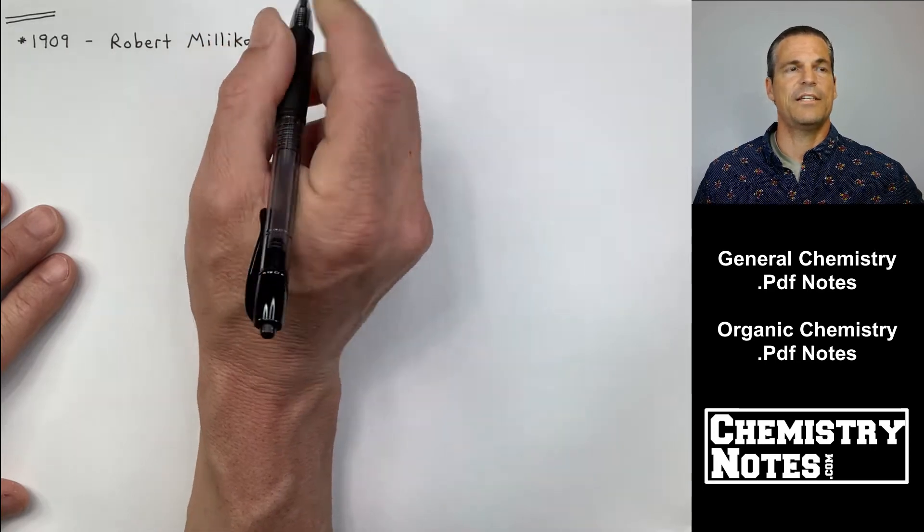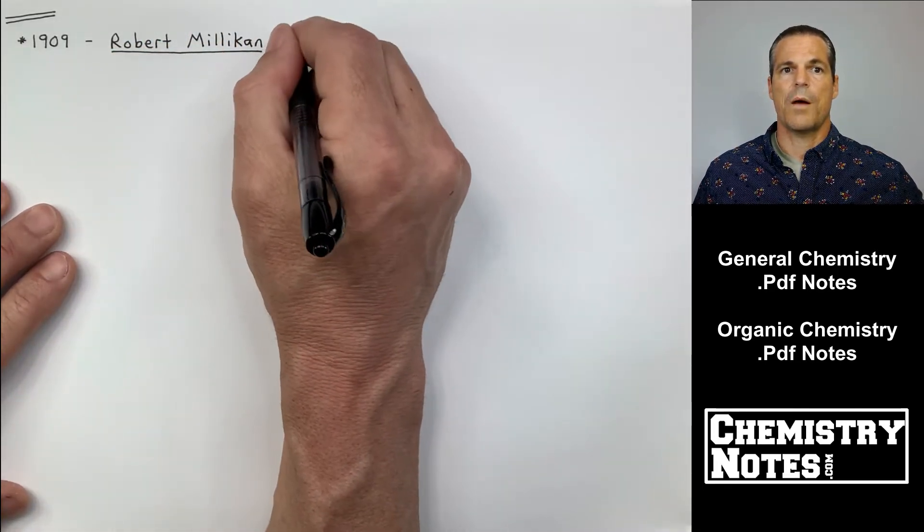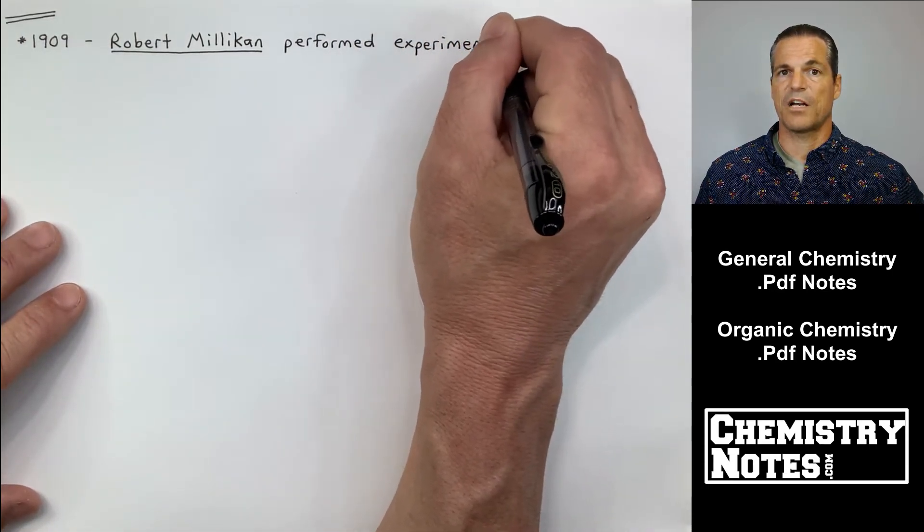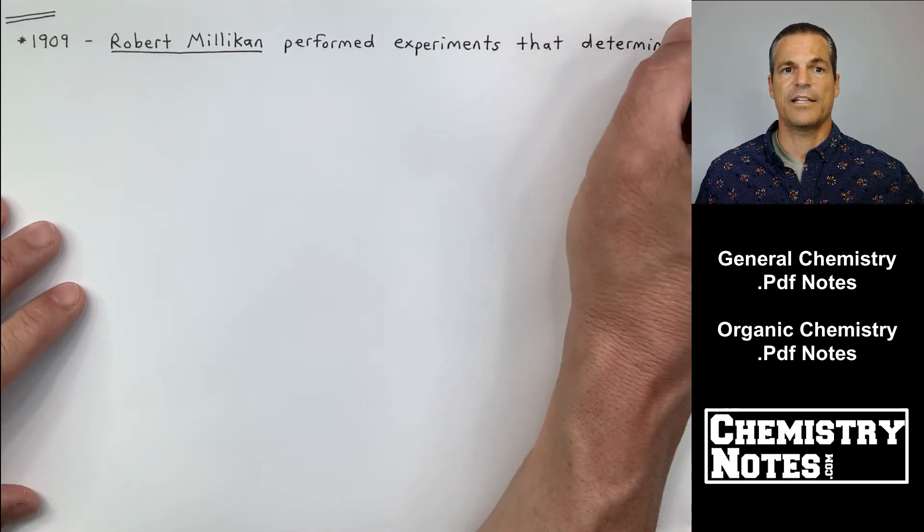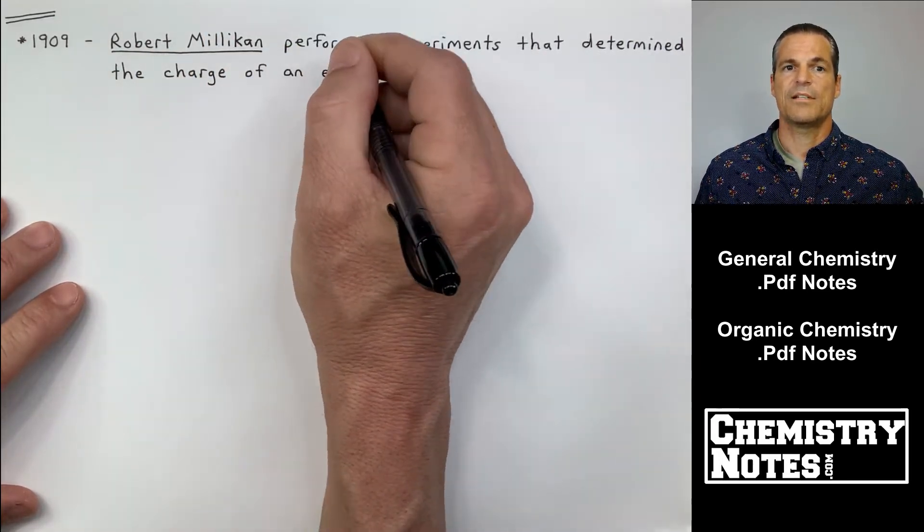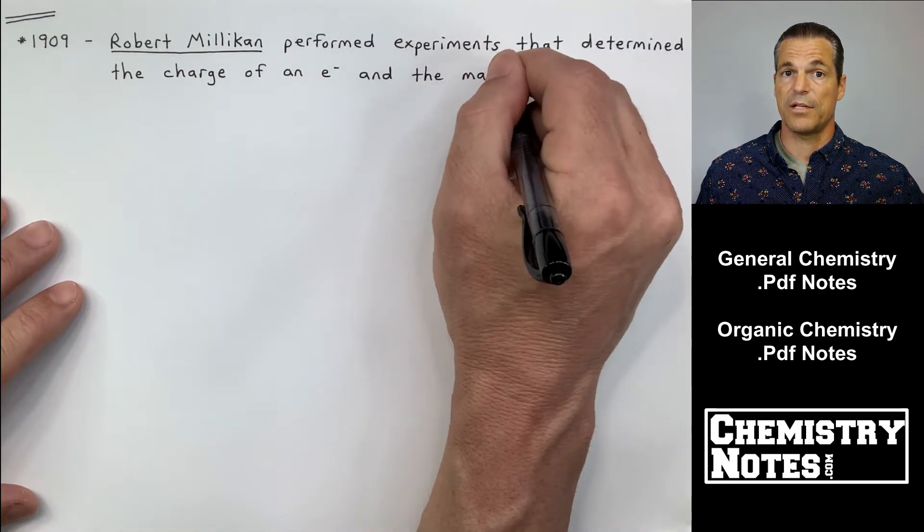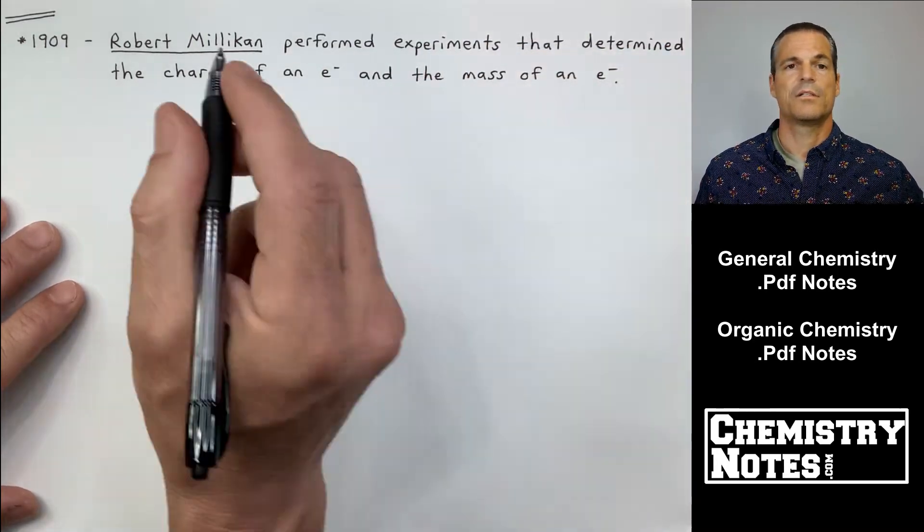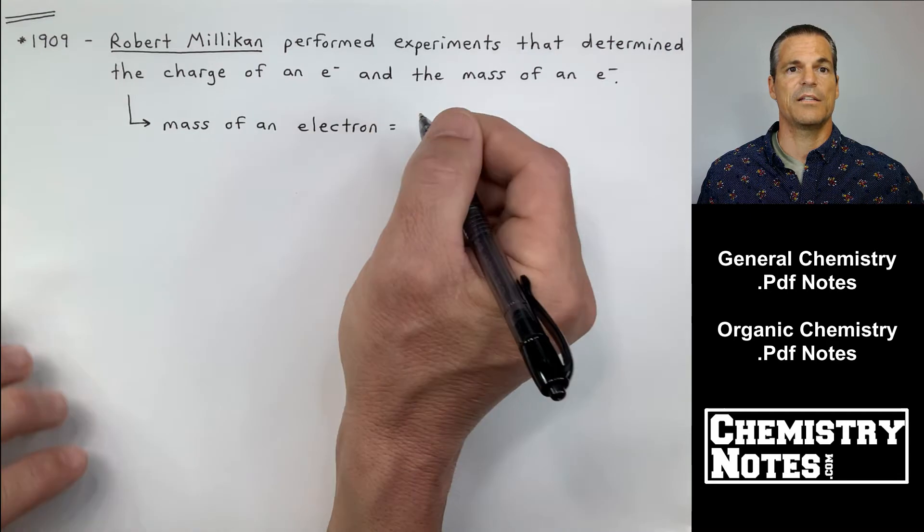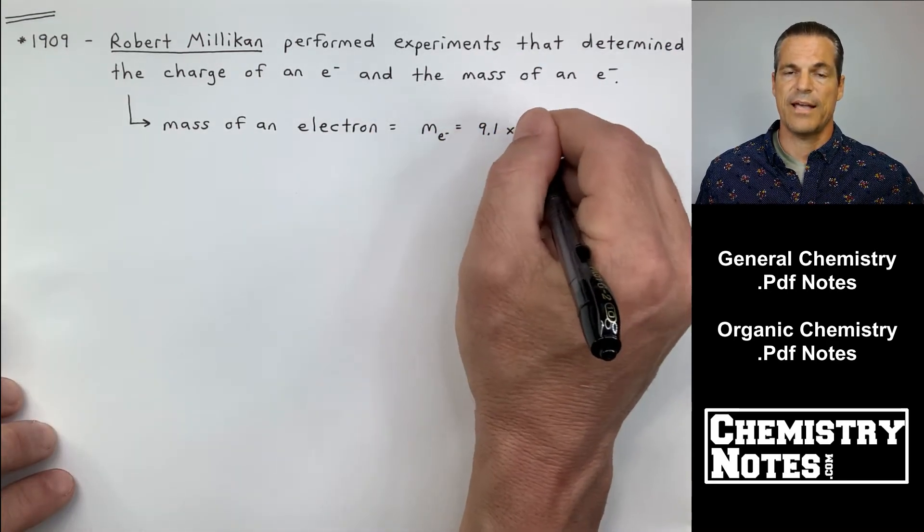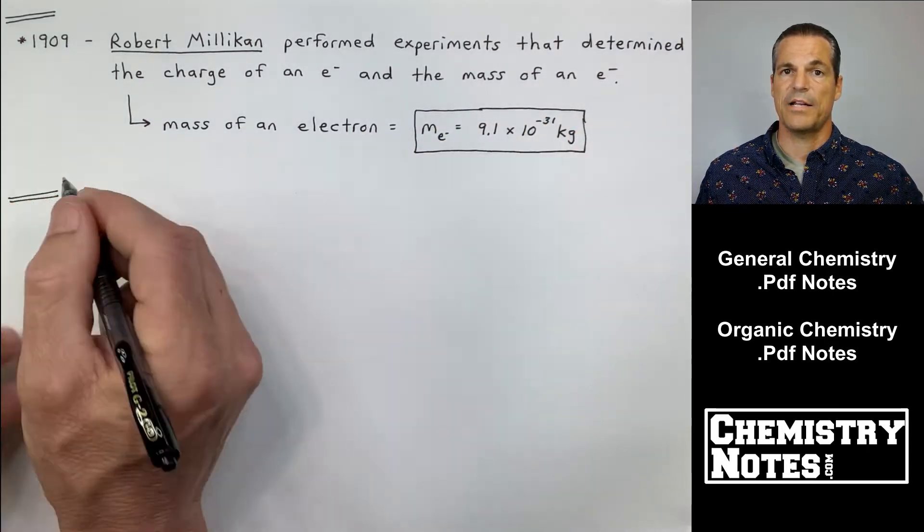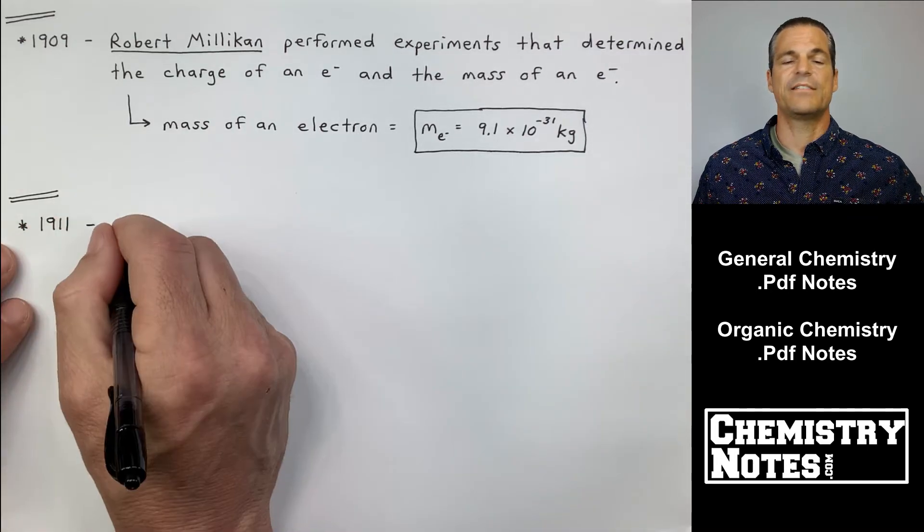1909, Robert Millikan. He's about six years after J.J. Thompson's discovery of the electron. In 1909, Robert Millikan performed experiments that determined the charge of the electron and the mass of the electron. So the mass of an electron is 9.1 times 10 to the minus 31st kilograms, infinitesimally small.